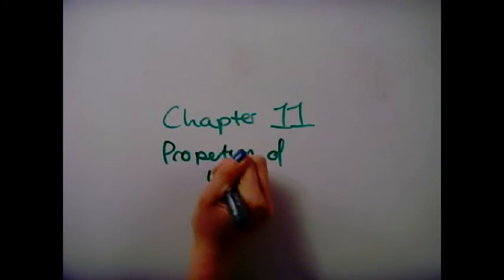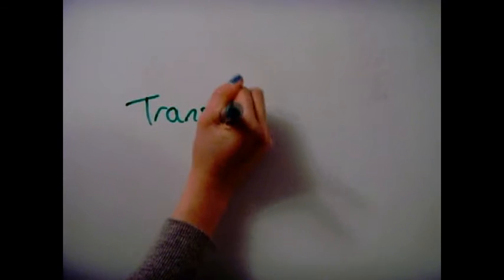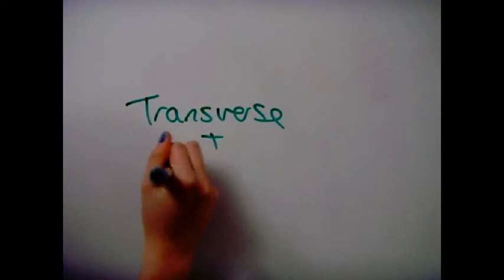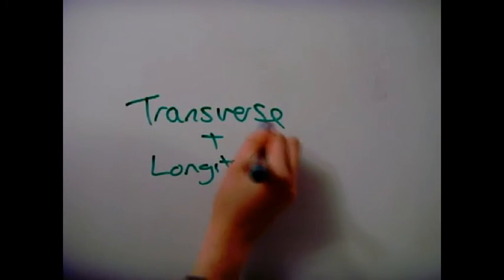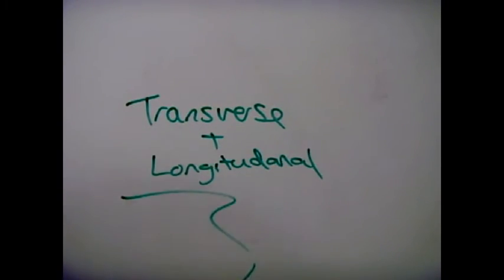Chapter 11 Properties of Waves. A wave carries energy and information from place to place without transferring matter, and there are two types of waves: transverse and longitudinal waves.